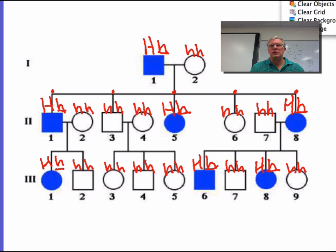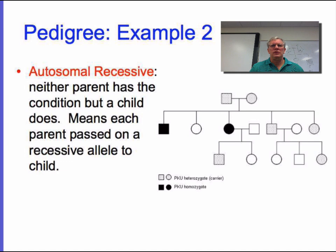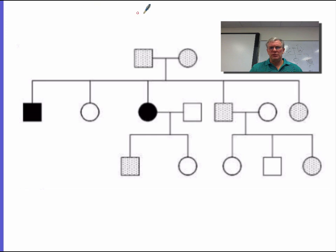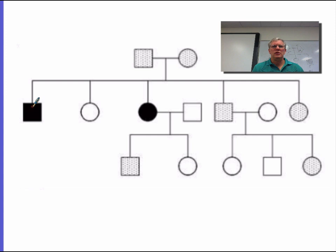Let me clear that. Let's move on to another example. This is an example of a recessive transmitted disorder on an autosome. Notice that neither parent has the disorder, but there are children that have it. When you have a recessive linked disorder like this, we know that in order to have the condition you have to have two recessive alleles, so we automatically know the genotypes of anybody that has the disorder. Let's use big B and little b. Everybody that has the disorder is going to be little b, little b.